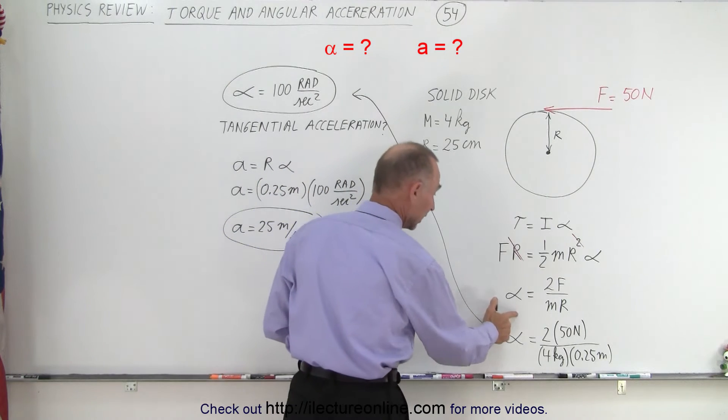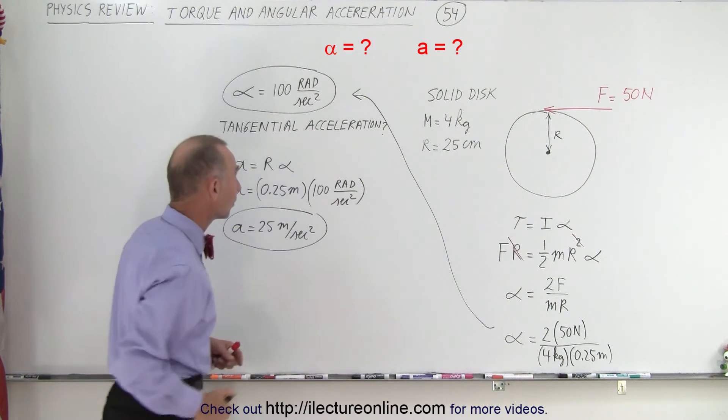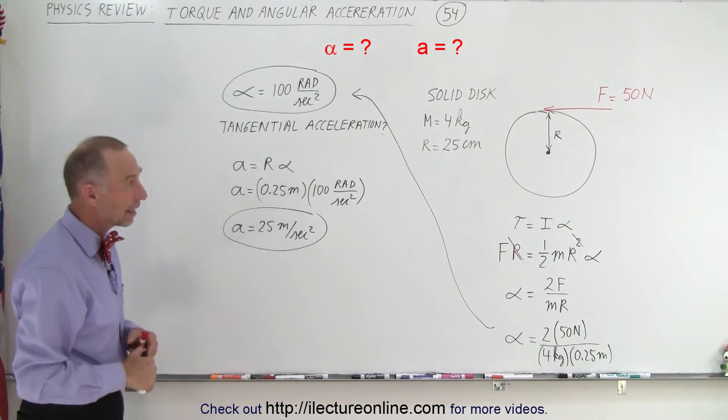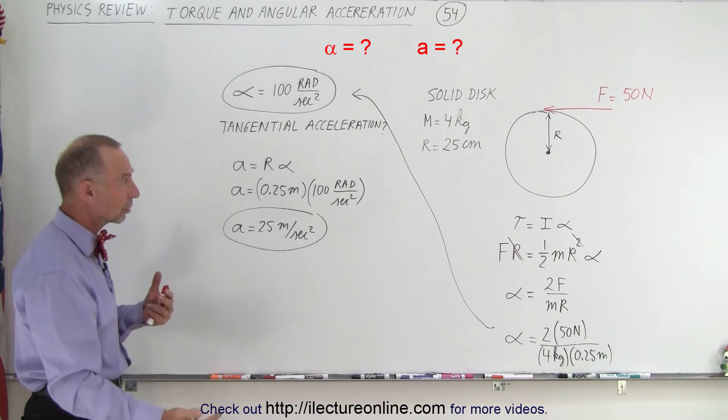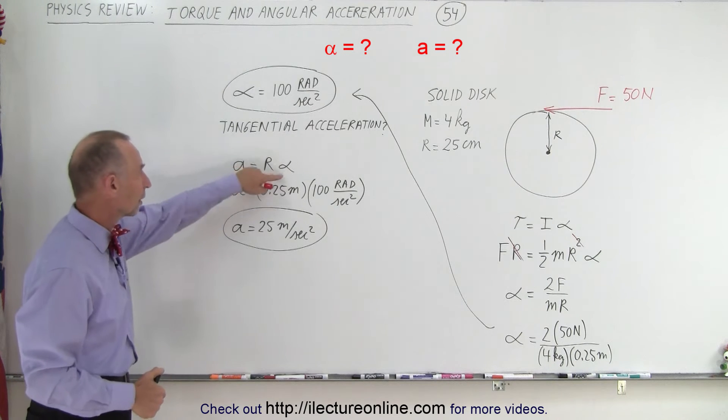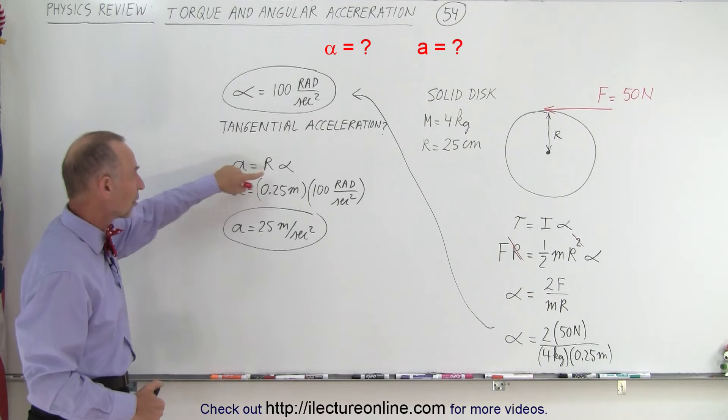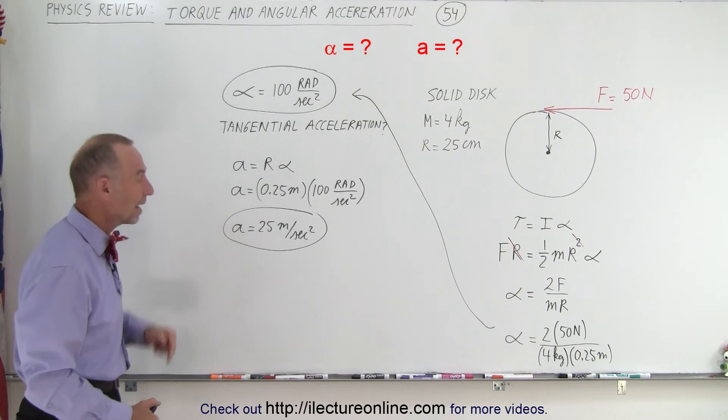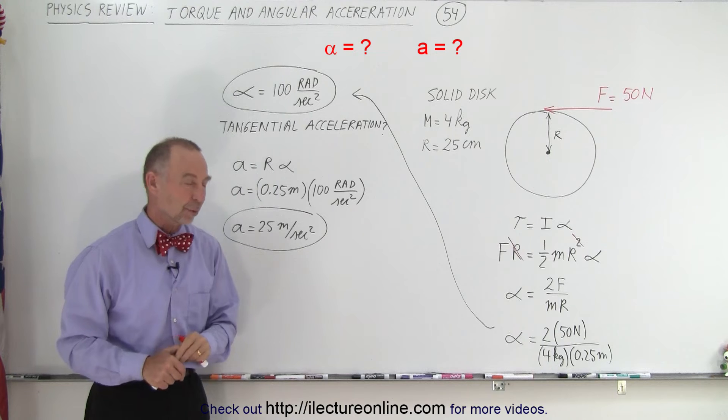Solve that for the angular acceleration and plug in the numbers. You get 100 radians per second squared. If you want to know the acceleration along the tangent, you find the relationship between the tangential acceleration and the angular acceleration. Solve for A, and you get 25 meters per second squared.